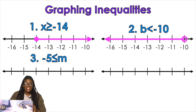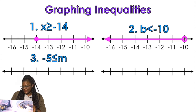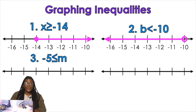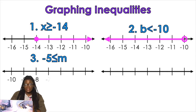Negative five is less than or equal to m. Now this one is a little bit tricky. We're going to notice that the letter is not on the same side as it usually is. What I usually do is, in my head, flip it around.